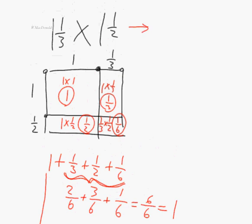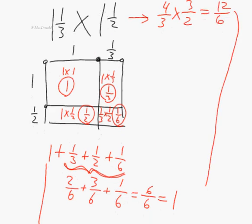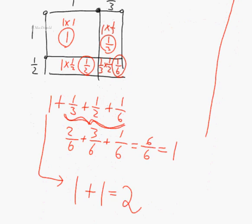Checking with improper fractions: 4 thirds multiplied by 3 halves gives 12 sixths, which equals 2. Confirmed.